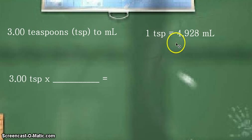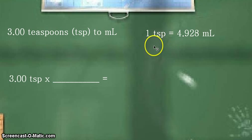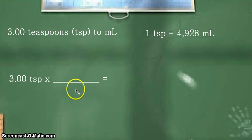So we have here our equivalent statement, which is 1 teaspoon. Now remember, this is the US teaspoon, which is approximately equal to 4.928 mL. We will be needing this equivalent statement and transform it into the corresponding conversion factor so that we'll be able to place it here to solve the problem.